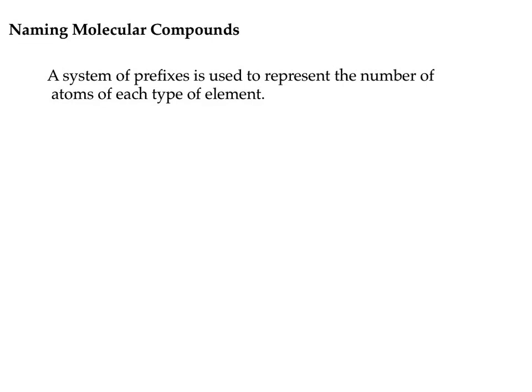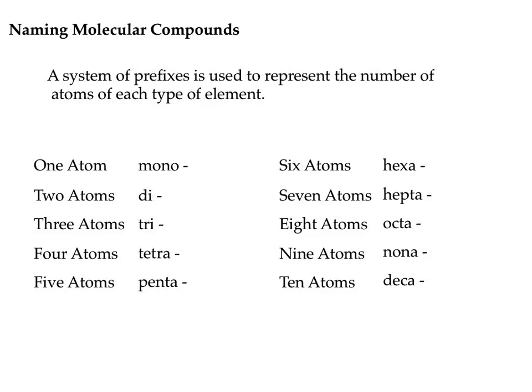This is all about a prefix system. Here are the prefixes: one is mono, two is di, three is tri, four is tetra, five is penta, six is hexa — like hexagon has six sides — seven is hepta, eight is octa — like octopus, it has eight legs — nine is nona, and ten is deca.